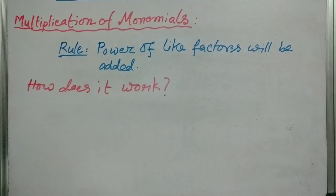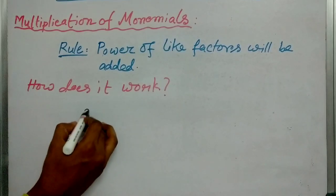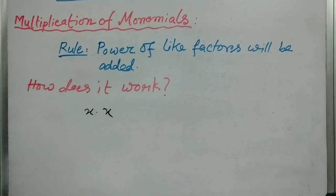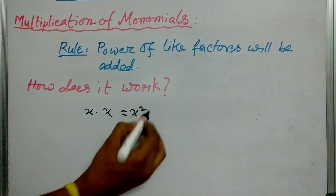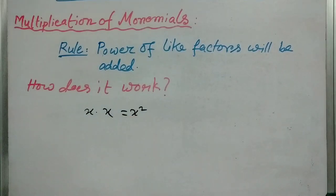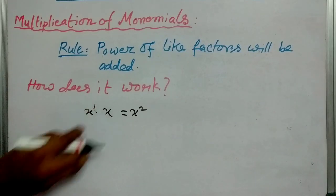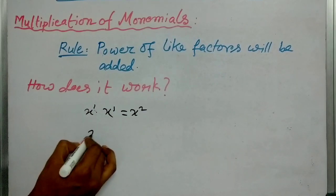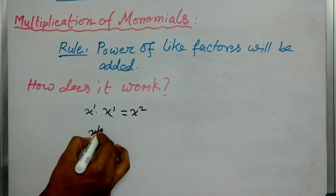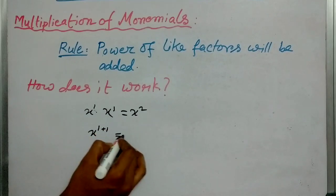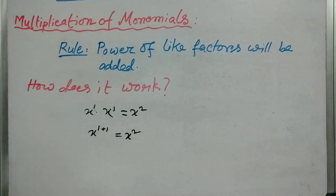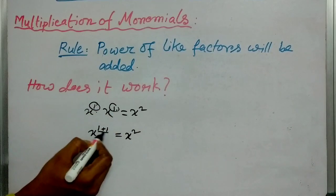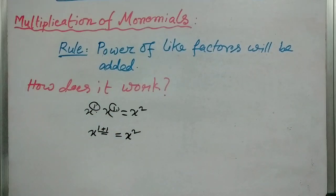Now, the question may arise: how does it work? Suppose you are multiplying x with x — what will you write? Obviously x squared. What is the power of x here? It is x to the power 1 and here it is x to the power 1. So x to the power 1 plus 1, that is x squared. The powers are added and the result is x squared.